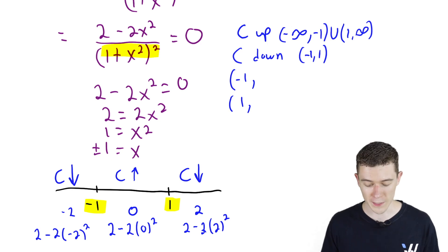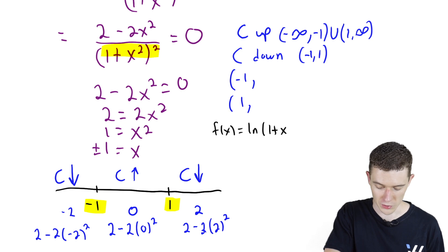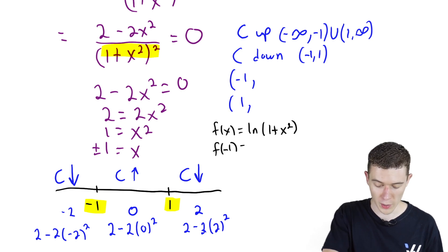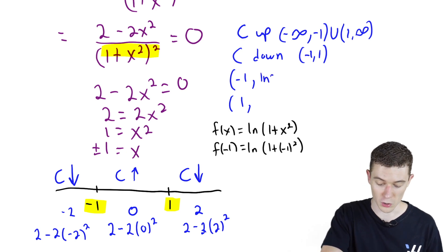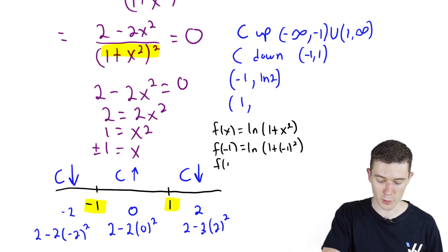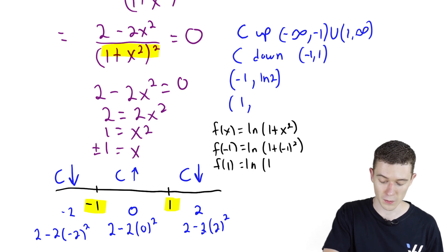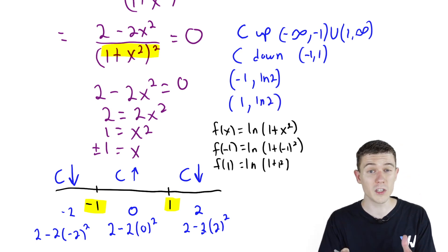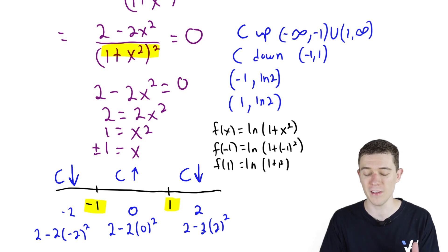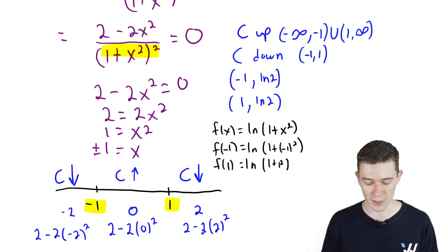To get the full point, we'll plug those x values into the original function, which was natural log of 1 plus x squared. If we plug in negative 1: natural log of 1 plus (−1) squared — negative 1 squared is 1, so we get natural log 2. Similarly, if we plug in positive 1: 1 plus 1 squared also gives natural log 2. So both inflection points are at (−1, ln 2) and (1, ln 2) — that's where our function changes concavity.